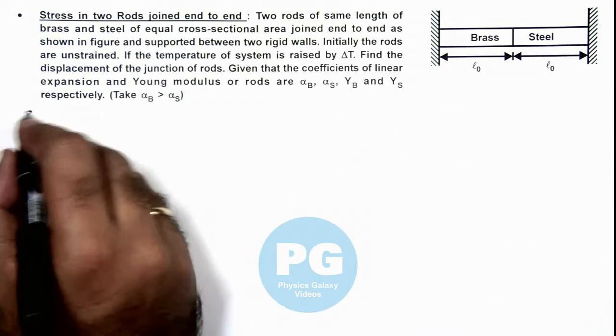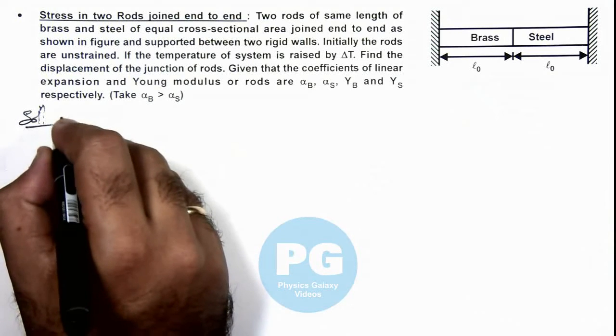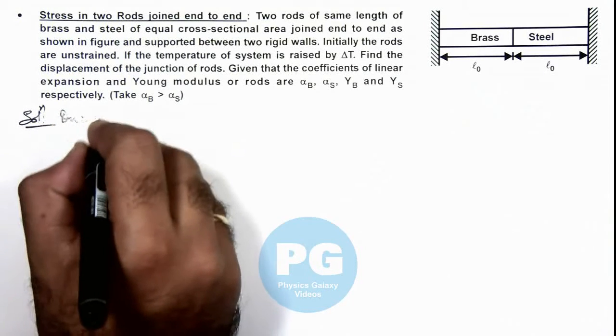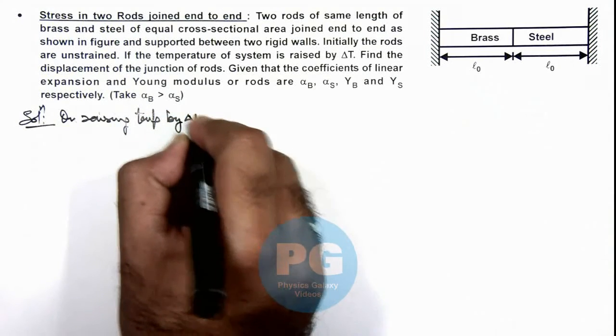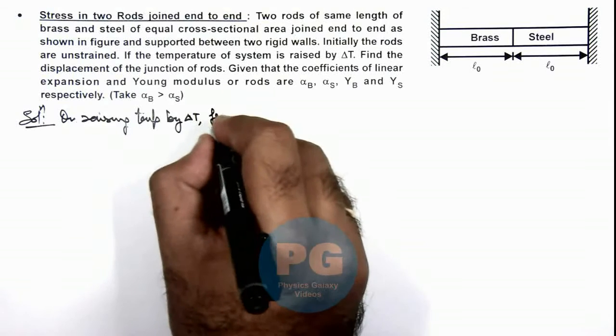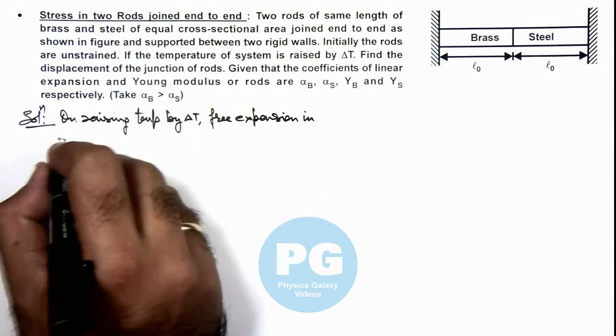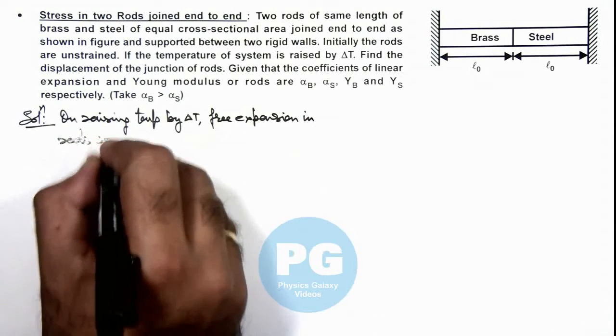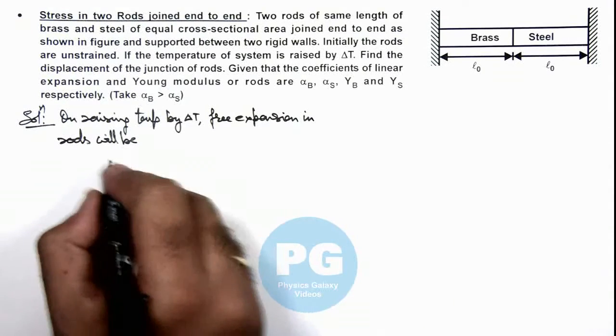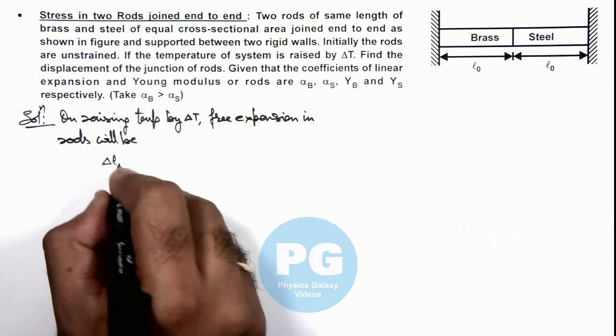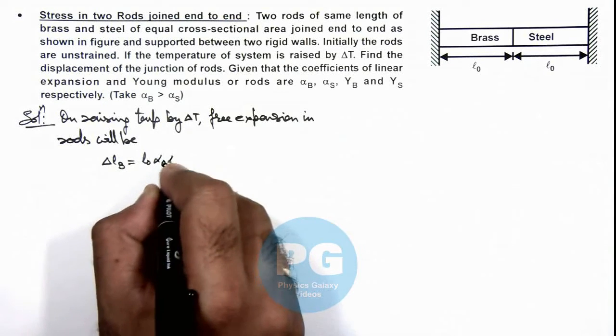So in this solution we can write if initial length is L₀, on raising the temperature by ΔT, free expansion in rods will be—here I am considering free expansion means if the rods are independent—then we can write ΔL of brass as L₀·αB·ΔT.